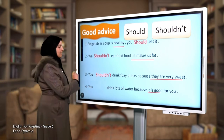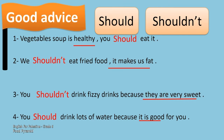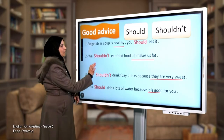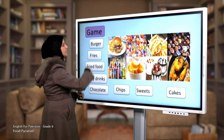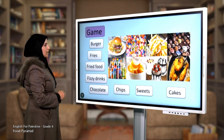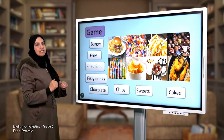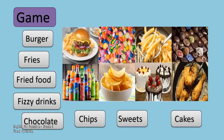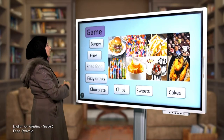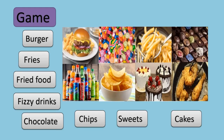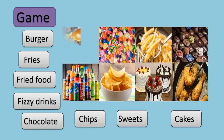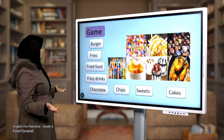Yes, we should drink lots of water. Now it's time to play a game — a very beautiful game! You have these unhealthy foods and we are going to find them and delete them. The foods are: burger, fries, fried food, fizzy drinks, chocolate, chips, sweets, and cakes. Who can tell me where the burger is? Excellent — this is the burger, I delete it. Now it's the fries' turn.